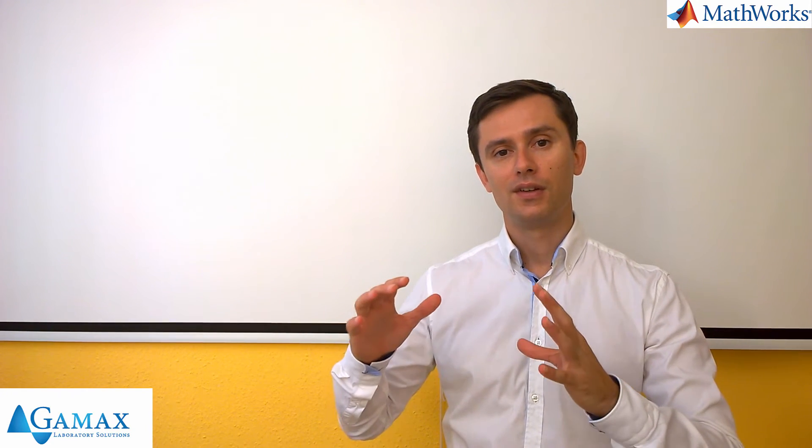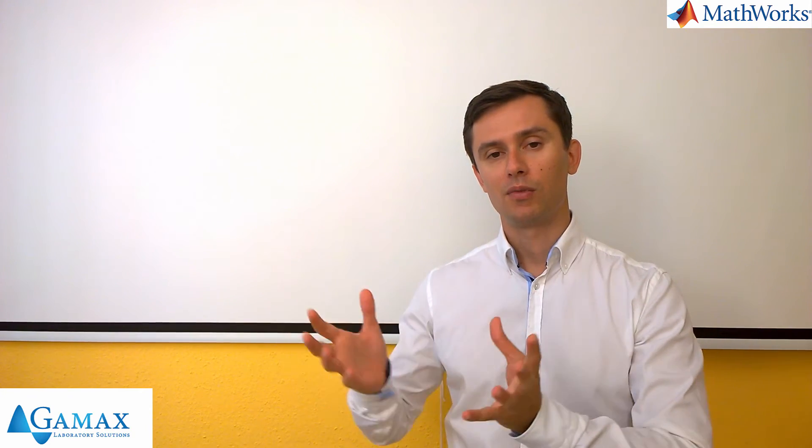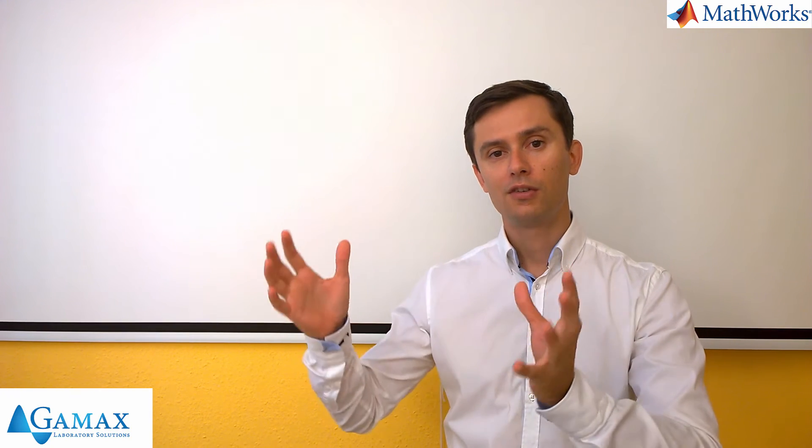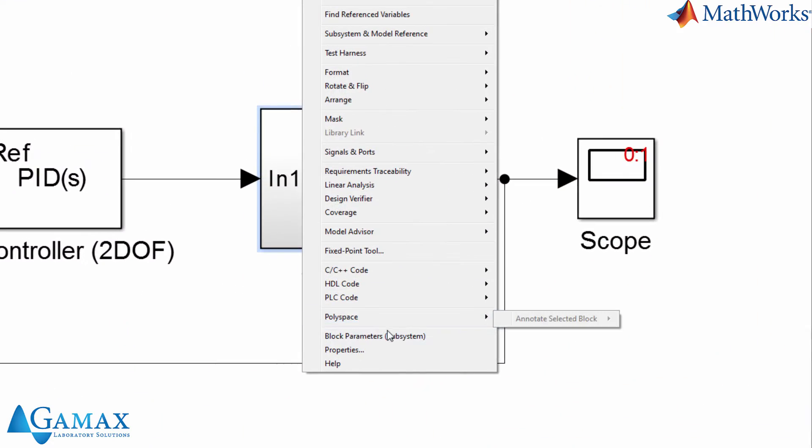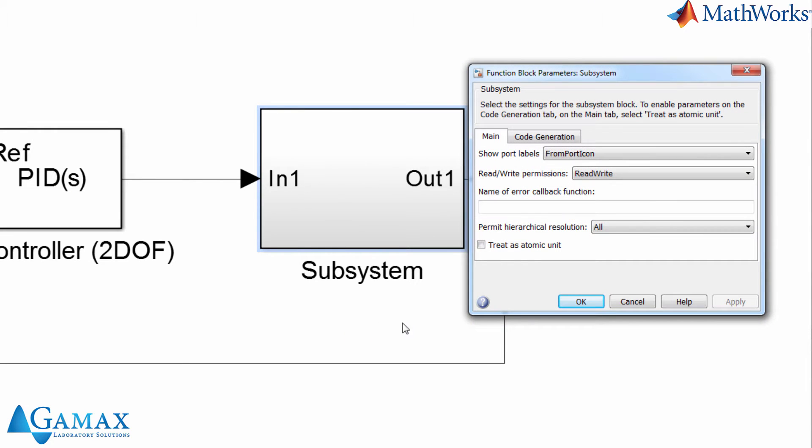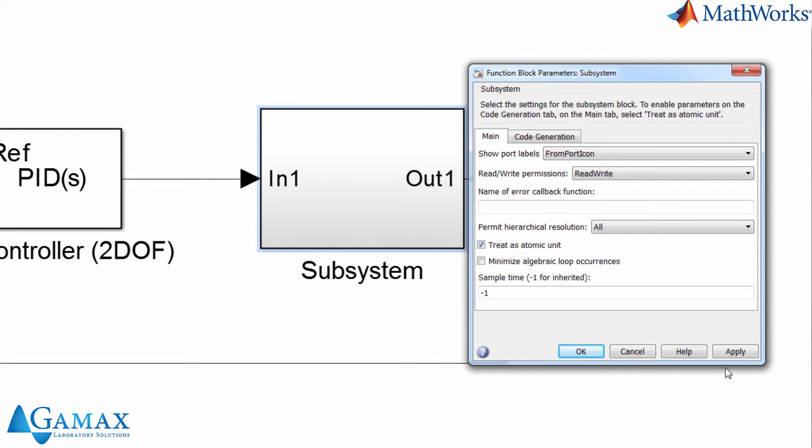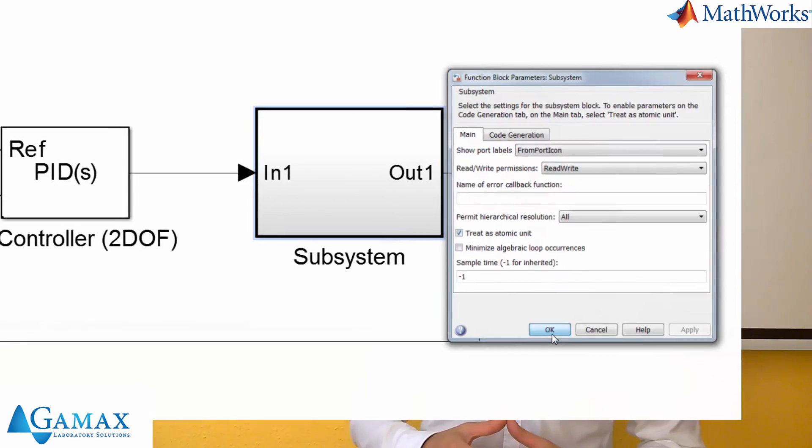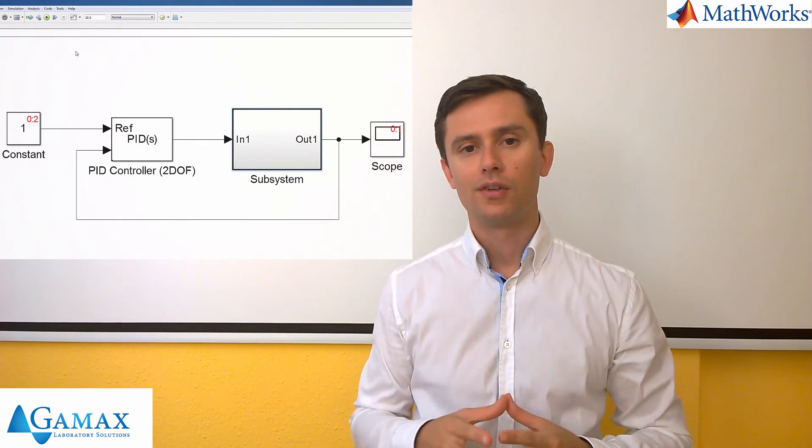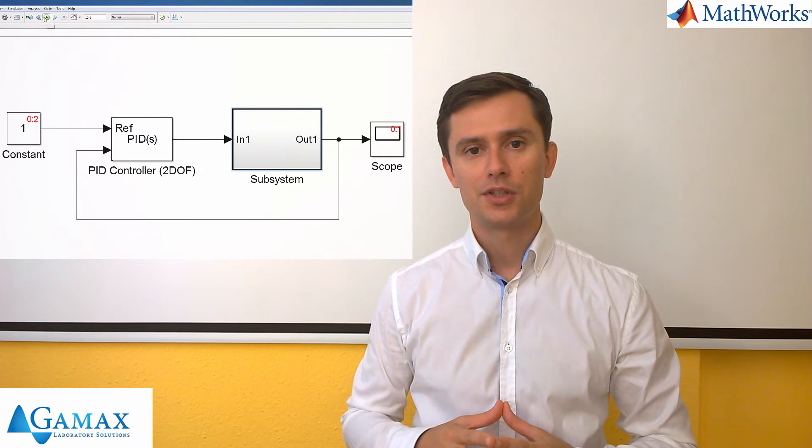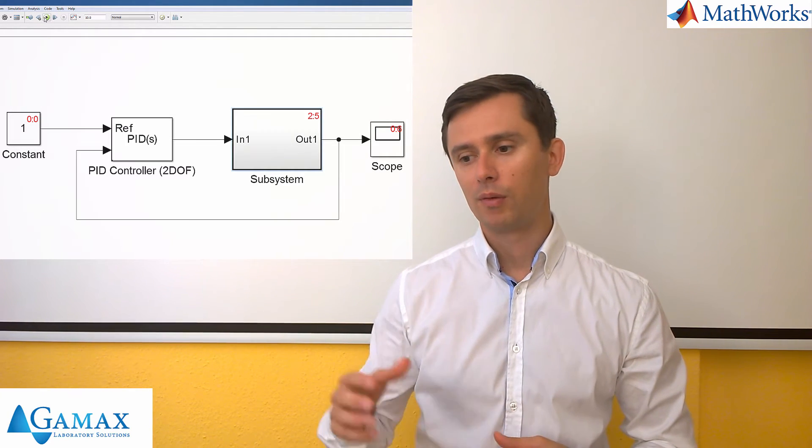If we want that the blocks inside the subsystem should be executed actually together, then we can create something called an atomic subsystem. To be able to do that, we need to go to block properties and select create as atomic unit checkbox. In this case, we will see that the edges of the subsystem block will change and it will become an atomic subsystem.